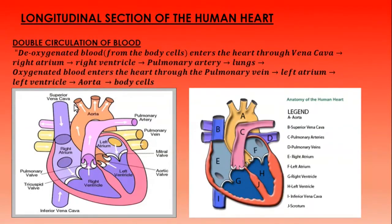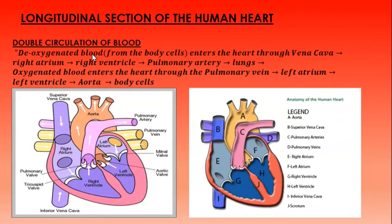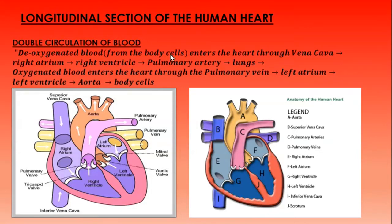This kind of circulation is called double circulation. To summarize the path: deoxygenated blood enters the heart through the vena cava — the largest vein of the body — then into the right atrium, then the right ventricle, and is pumped under pressure into the pulmonary artery. The word 'pulmonary' means lung. From the pulmonary artery, it goes to the lungs for oxygenation.